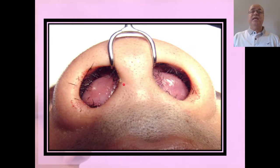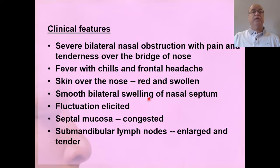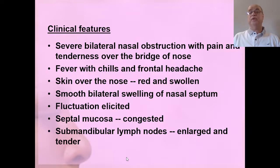On examination, there will again be bilateral nasal swelling, but this time it will be fluctuant and bilateral, causing nasal obstruction with pain and tenderness over the bridge of the nose. Since infection has occurred, there will be high-grade fever with chills and severe frontal headache. The skin over the nose will be red and swollen, with smooth bilateral swelling of the nasal septum. Septal mucosa will be congested, and submandibular lymph nodes may be enlarged and tender.